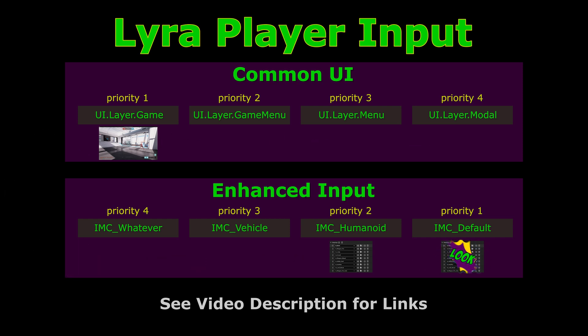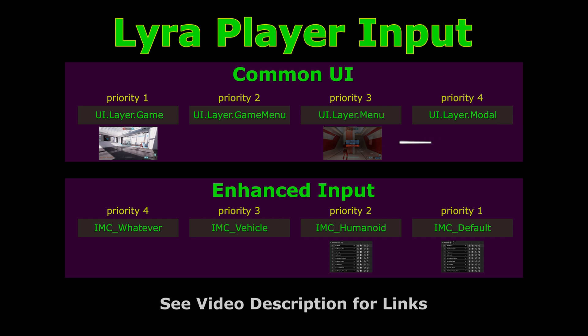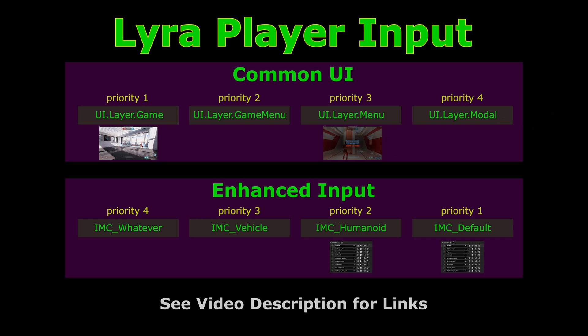While playing the game, if you press the Escape key, on ui.layer.menu, a new menu will come up and consume all input. There's no input going to Enhanced Input anymore — none of your input mappings have any effect. All of the input is being consumed by this priority 3 input layer. Closing the menu returns to the previous state, activating Enhanced Input.